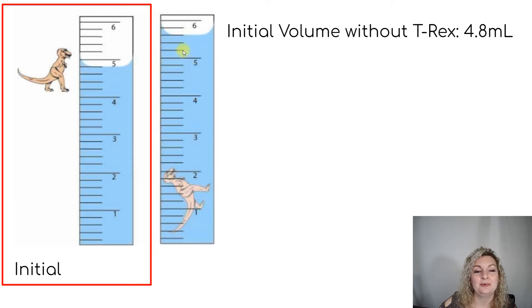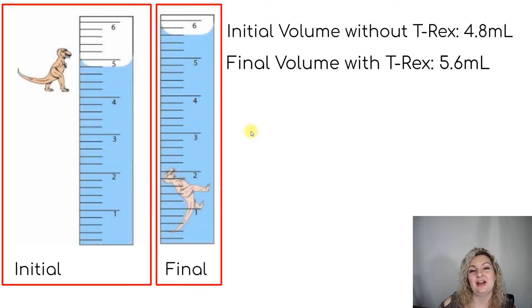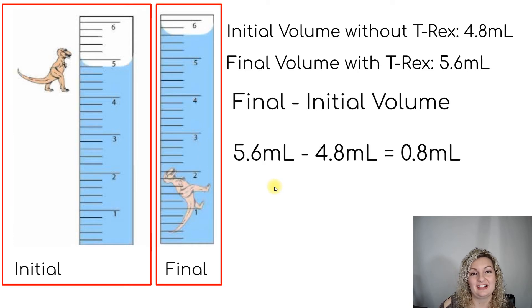So it's going to be 5.2, 5.4, and 5.6. So our second reading, our final reading, is going to be 5.6 milliliters. Now what we have to do to find the actual displacement is we're going to need to subtract.